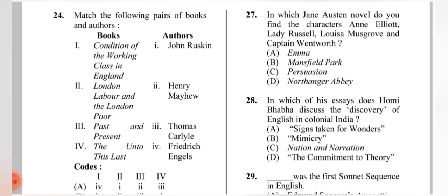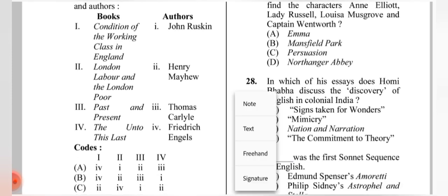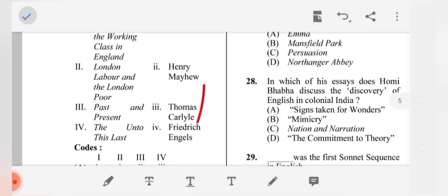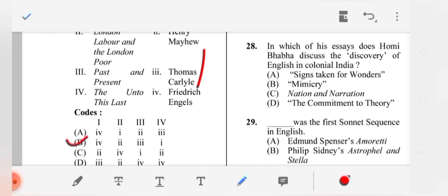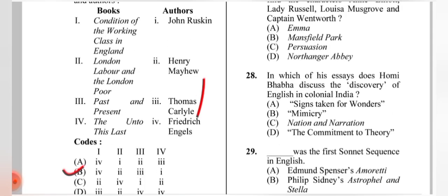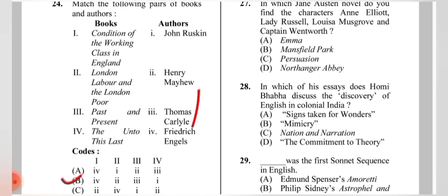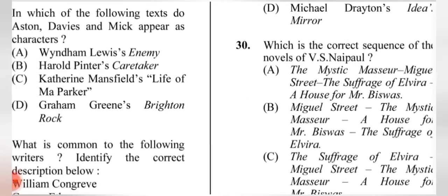Question 24: Match the following pairs. The correct answer is (B): 'Condition of the Working Class in England' — Frederick Engels; 'London Labour and the London Poor' — Henry Mayhew; the remaining entries follow accordingly.